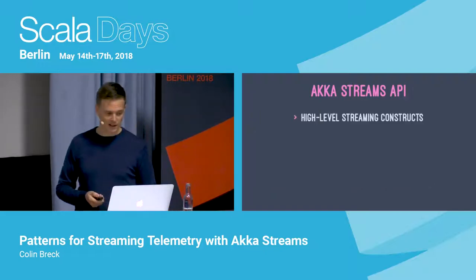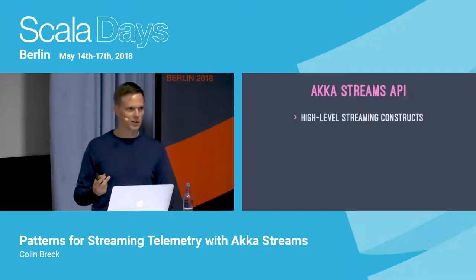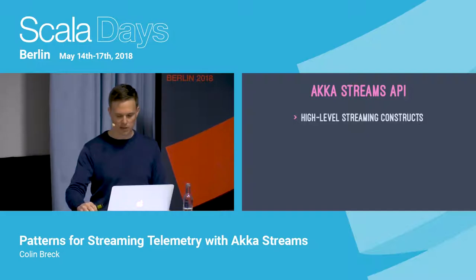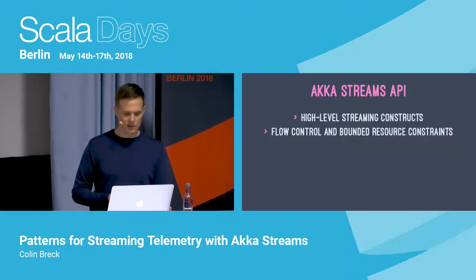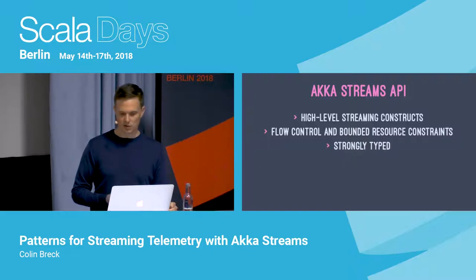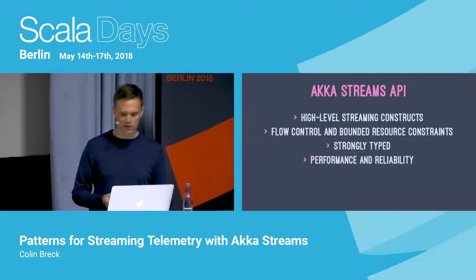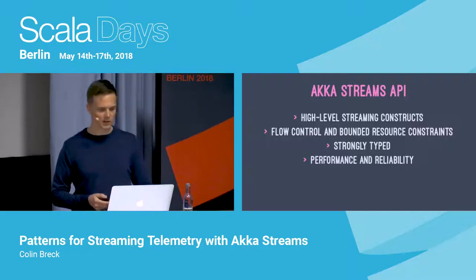Summing up: the Akka Streams API incorporates high-level streaming constructs, taking the reactive streams specification up to a higher level for application developers. Things like throttling are conceptually easy but the devil is in the details of implementation — the API handles that for you. Because of the reactive streams specification, it also provides flow control and bounded resource constraints, making applications run reliably. It's strongly typed for compile-time safety, and it delivers great performance and reliability from personal experience — these systems run in production and just work, being very responsive to system dynamics and resilient to failures.